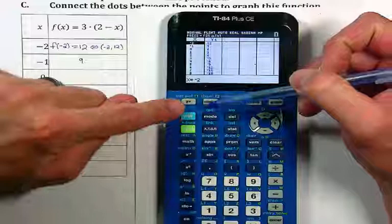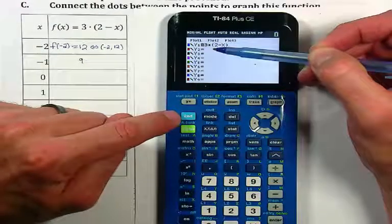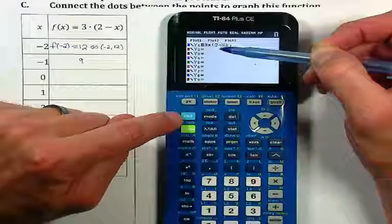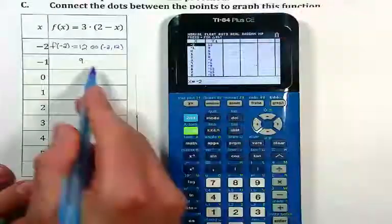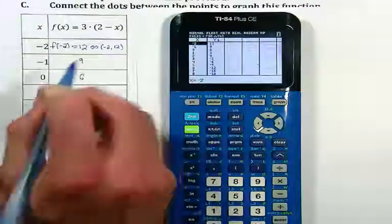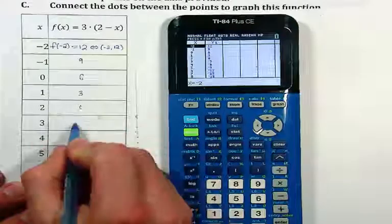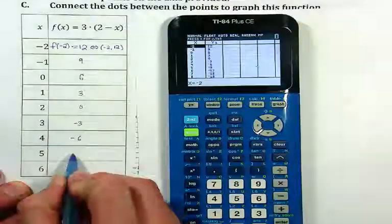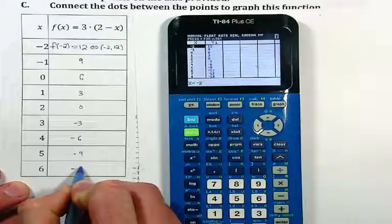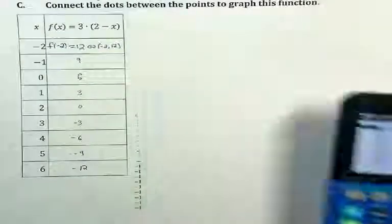Remember, if we go back to the y equal button, my y1 was the function 3 times 2 minus x. That's the exact function that I'm hoping to fill out. Going back to the table, I see 9, 6, 3, 0, negative 3, negative 6, negative 9, negative 12. And now I filled out my entire table just using the calculator. Do you see what a good use of technology that is?